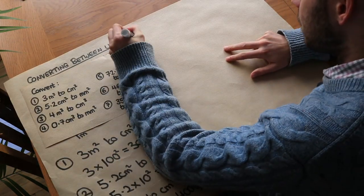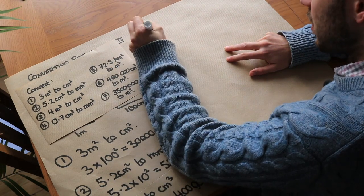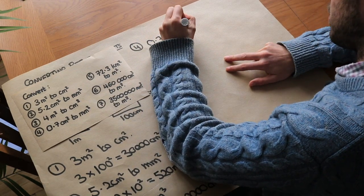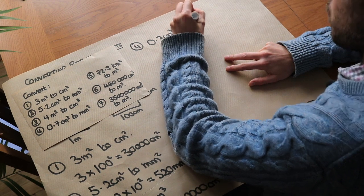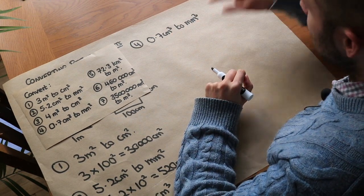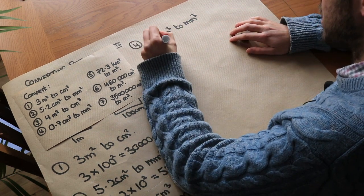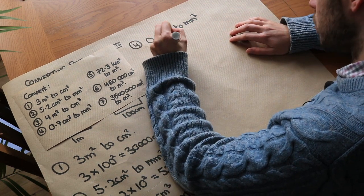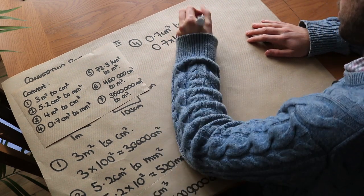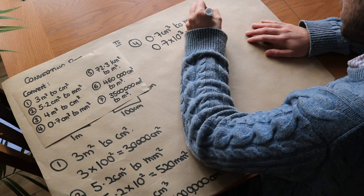Question 4: we've got 0.7 centimetres cubed to millimetres cubed. To get from centimetres to millimetres we multiply by ten, so to get from centimetres cubed to millimetres cubed we multiply by ten cubed. That moves the decimal place three positions: one, two, three — giving seven hundred millimetres cubed.